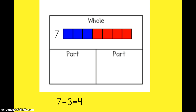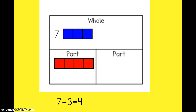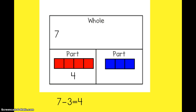Let's try to write another subtraction fact from that same whole number. This time I'm going to start by breaking off the red cubes. I would start with seven, I took four away — that was my first part — and the difference would be the next part. I want you to think for a second: how could I write a subtraction sentence that represents this part-part-whole mat? What would the related fact be?